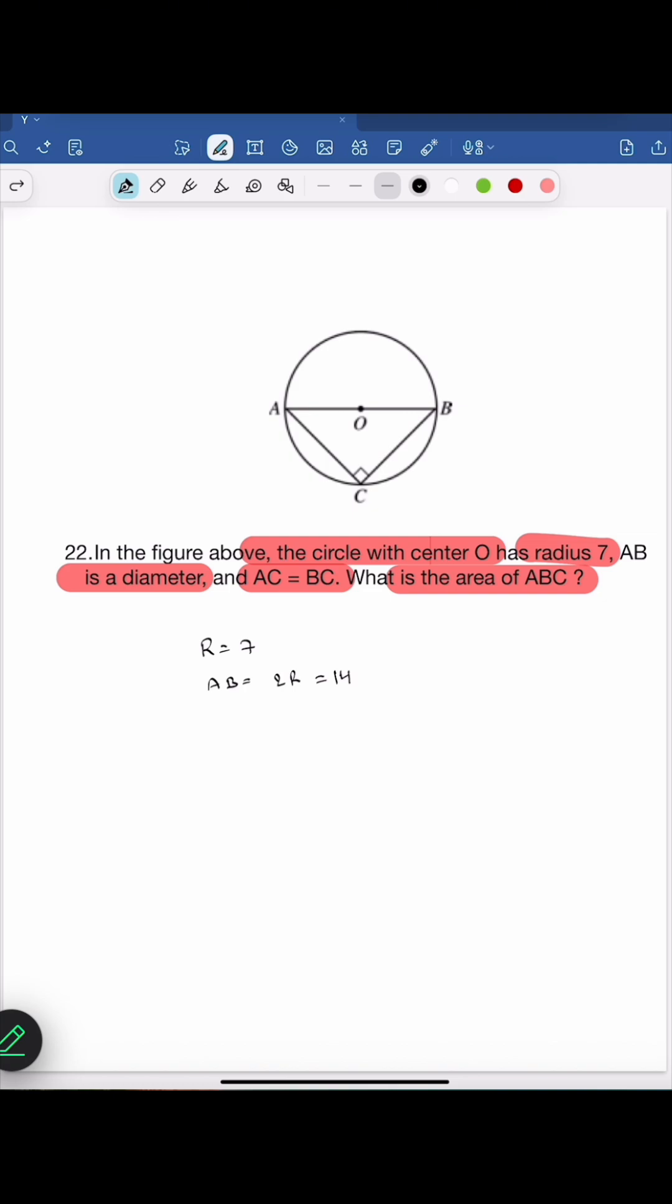Triangle ABC is right angle isosceles triangle. AC is equals to BC. Let's apply Pythagoras theorem for this triangle.